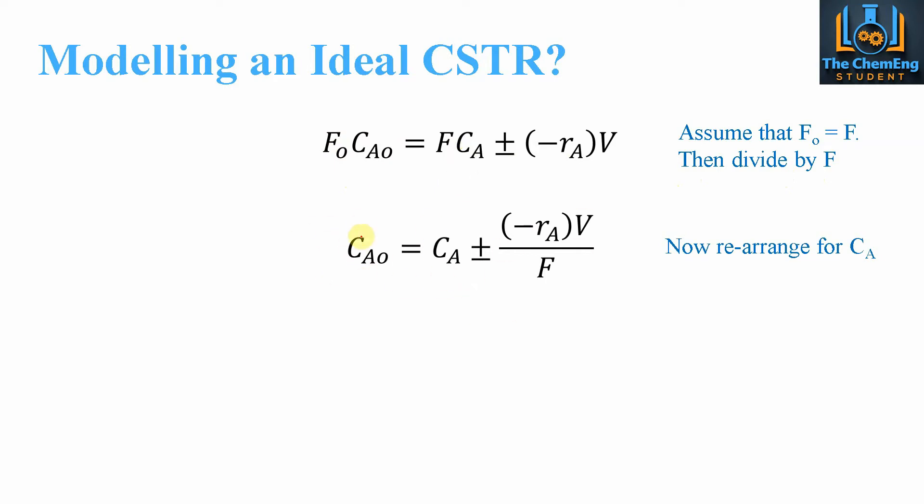Now this is CA₀ in terms of CA. Whereas we want to know what the final concentration is going to be, based off the initial concentration, the volume, the flow rate, and the rate constant. So what we do is we rearrange and we get this expression here. And this is the modelling for an ideal CSTR in order to calculate the final concentration based on the initial concentration and the volume and the flow rate of the system.